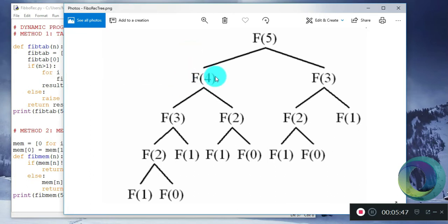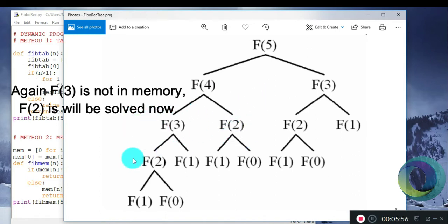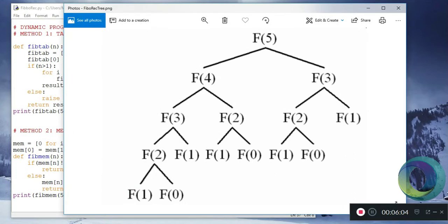Again, as F of 4 is not committed to memory, F of 3 and F of 2 would be called. First F of 3 would be solved. F of 2 is not in memory. F of 2 would be solved and we have the value of F of 1 and F of 0, so we get the value of fibmem 2.